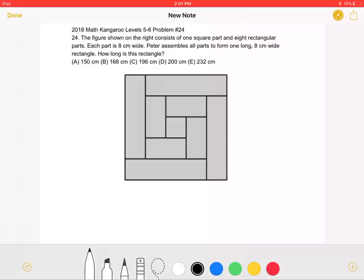This is the 2018 Math Kangaroo Levels 5-6 Problem Number 24. The figure shown on the right consists of one square part and eight rectangular parts. Each part is 8 centimeters wide. Peter assembles all parts to form one long, 8 centimeter wide rectangle. How long is this rectangle?